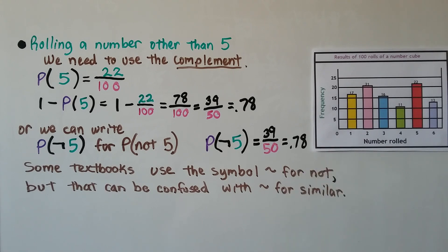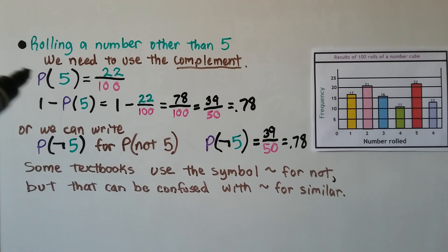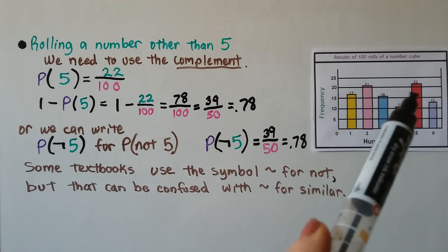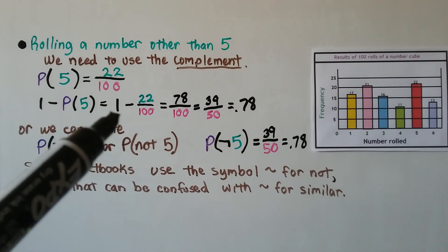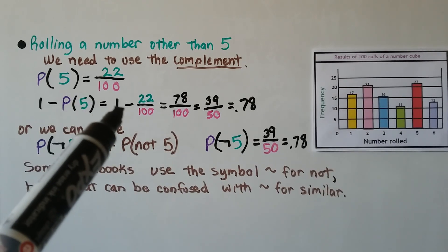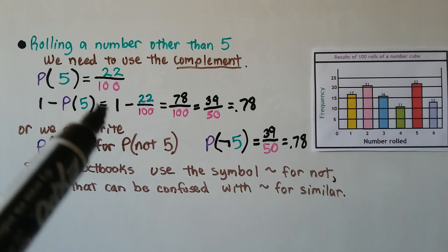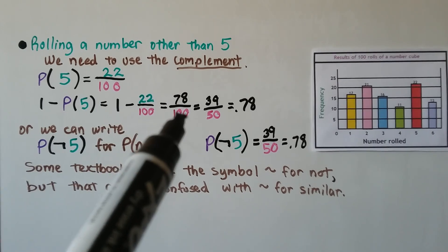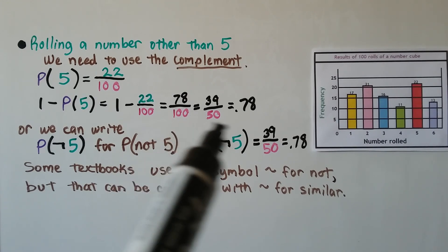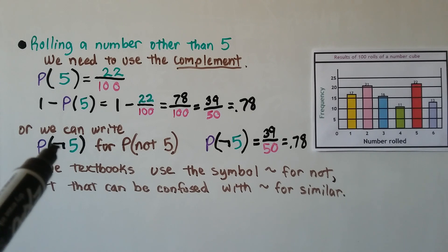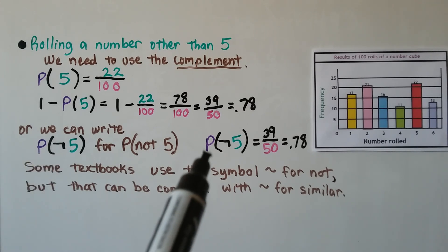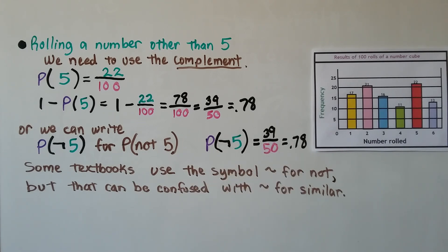Using the same data, what is the experimental probability of rolling a number other than 5? Since it's other than 5, we use the complement. The probability of rolling a 5 was 22 out of 100, so 22 one-hundredths. Subtracting from 1: 1 minus 22 one-hundredths equals 78 one-hundredths, or 39 fiftieths, or 0.78 as a decimal. We write this as P(not 5) = 39/50 or 0.78.